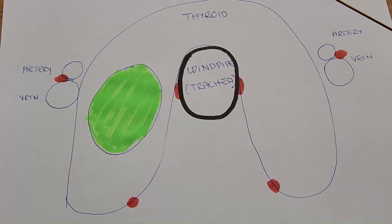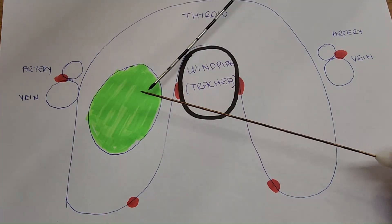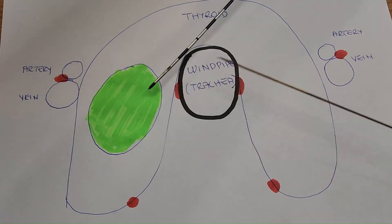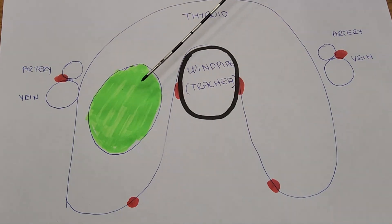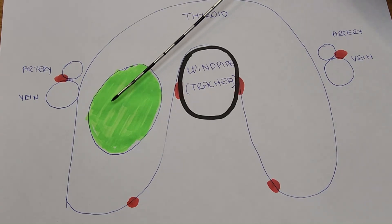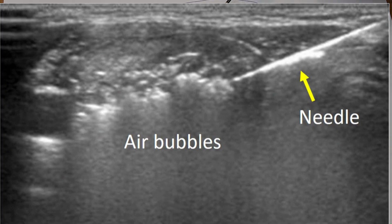In heat-based ablations like laser, radiofrequency, and microwave, with local anesthesia we advance the needle into the nodule. Several millimeters at the tip of the needle is the heating part. Since the heating part is much smaller than the nodule itself, we need to move it. This technique is called the moving shot technique, where the operator advances and withdraws the needle until most of the nodule is treated.